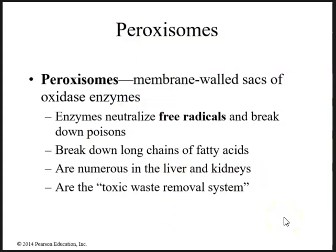The next organelle is peroxisomes — membrane-walled sacs of oxidase enzymes that help neutralize free radicals, break down poisons, and break down long chains of fatty acids. Peroxisomes are very numerous in the liver and kidneys because they help detoxify things — the liver and kidneys are very important in detoxification of our blood. Peroxisomes are the toxic waste removal system of the cell.